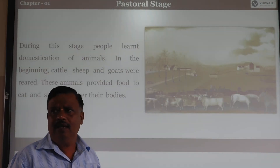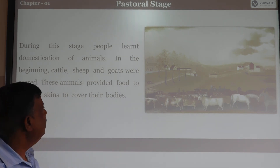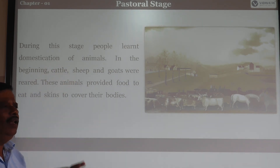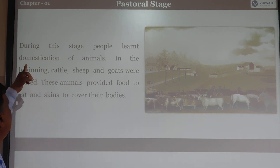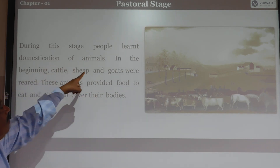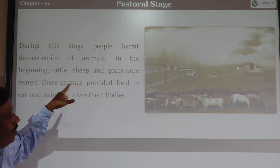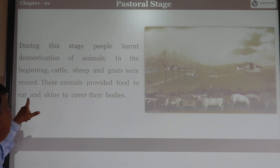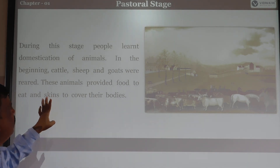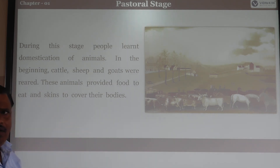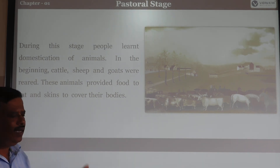The second stage is known as the Pastoral stage. In this stage, people learned domestication of animals. Unlike the hunting and fishing stage where there was no domestication, in the pastoral stage they began domesticating animals. Cattle, sheep, and goats were reared in this stage. These animals provided food to eat and skin to cover their bodies. We shall learn the next stage in the next class.